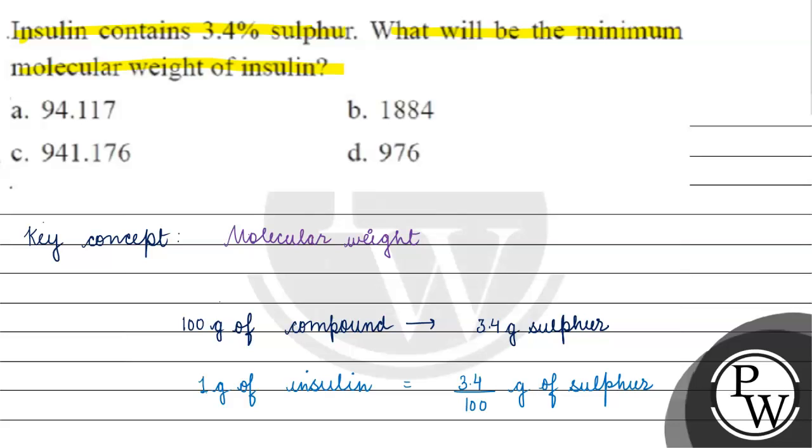So, now, if we assume this, that we have 1 sulfur atom. We have 1 sulfur atom. And what will we have for that sulfur atom? What will be the atomic mass? It will be 32 gram.